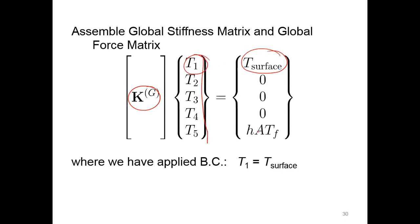At node five, we have the boundary condition hA times T_f. This is the convection boundary condition that's driving the heat transfer out of the wall.